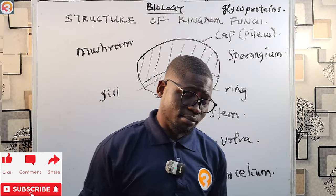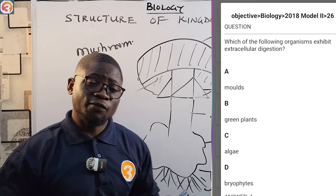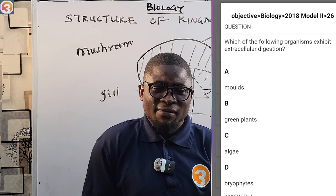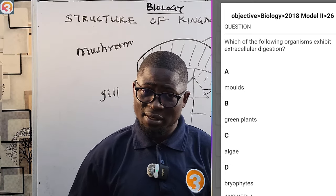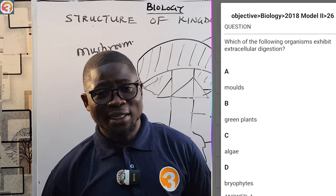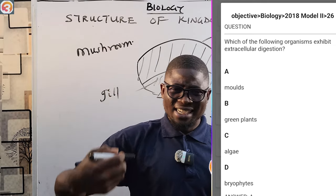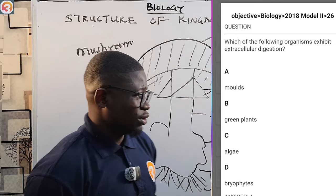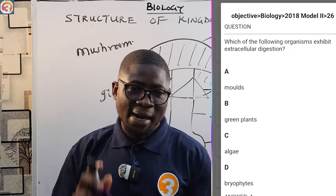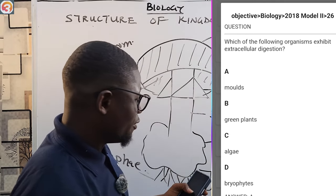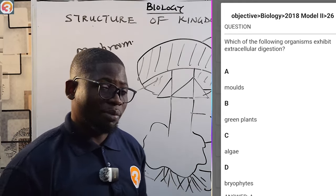A 2018 question asks: 'Which of the following organisms exhibits extracellular digestion? A. Molds, B. Green plants, C. Algae, D. Bryophytes.' The answer is A, molds. Molds, mushrooms, and yeast cells are all examples of fungi, and fungi exhibit extracellular digestion — they excrete digestive enzymes onto food and absorb it into their body.